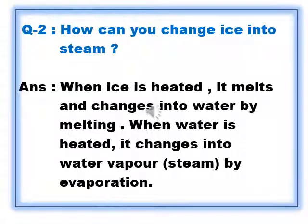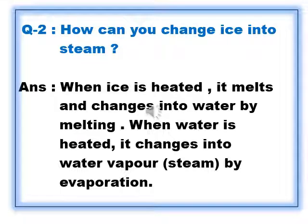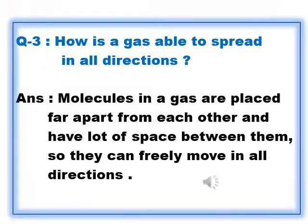Question number 2: How can you change ice into steam? Answer: When ice is heated, it melts and changes into water by melting. When water is heated, it changes into water vapor, steam, by evaporation.